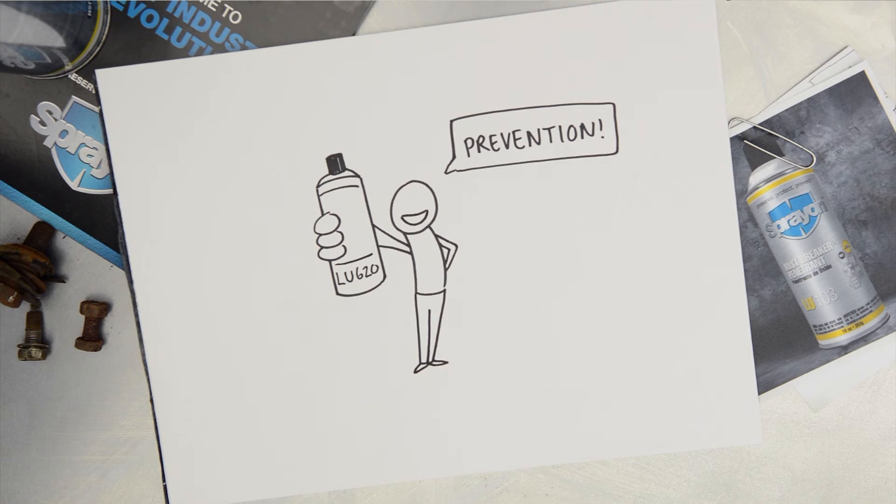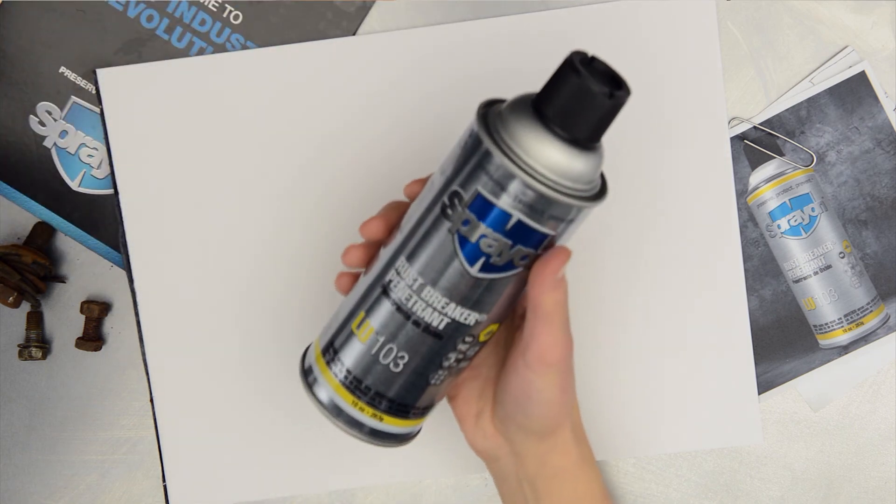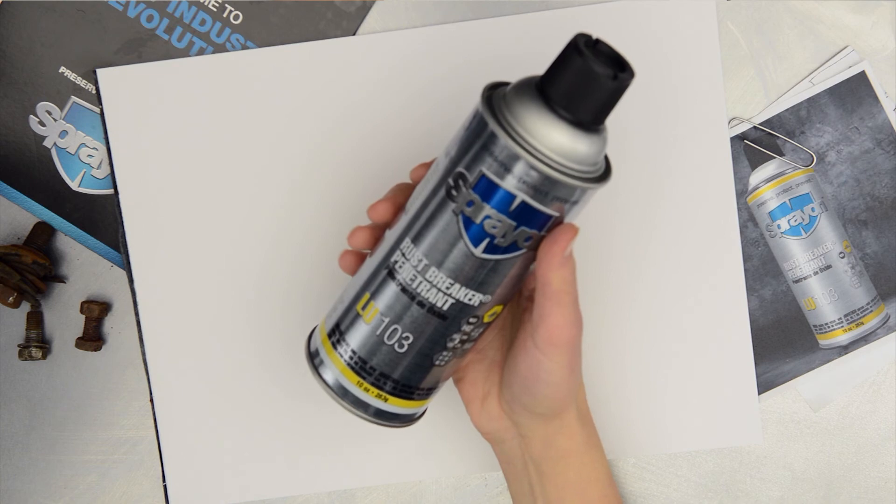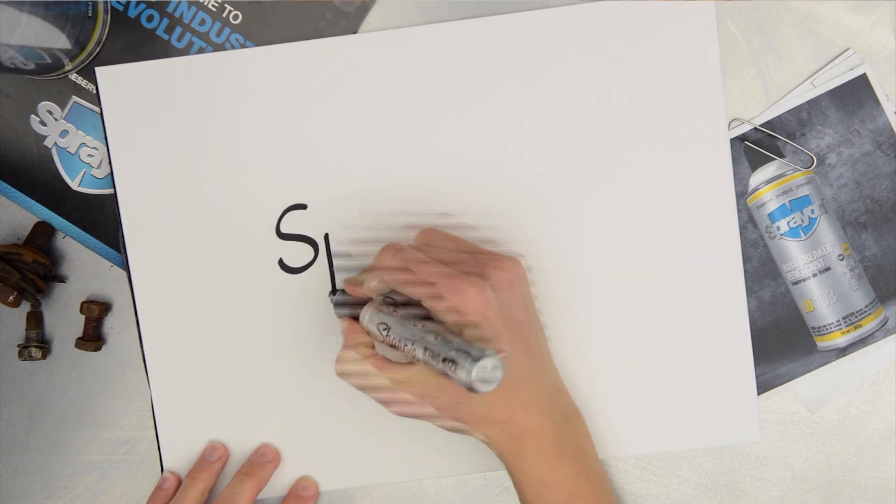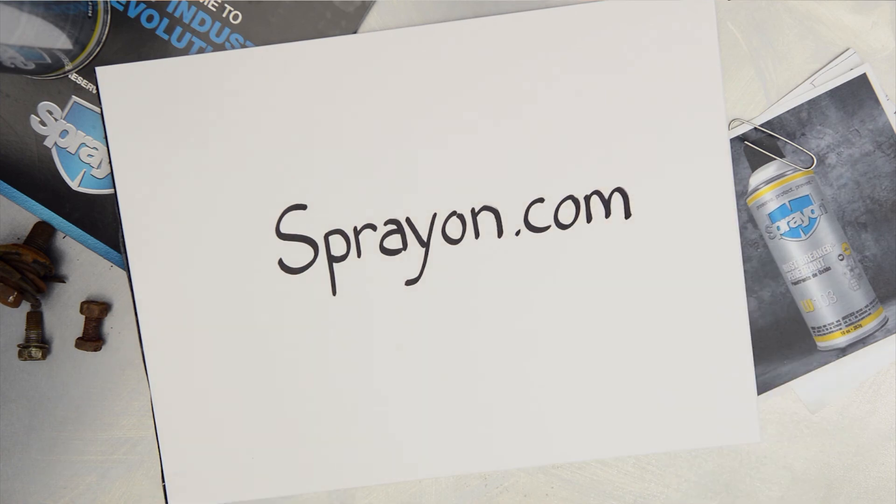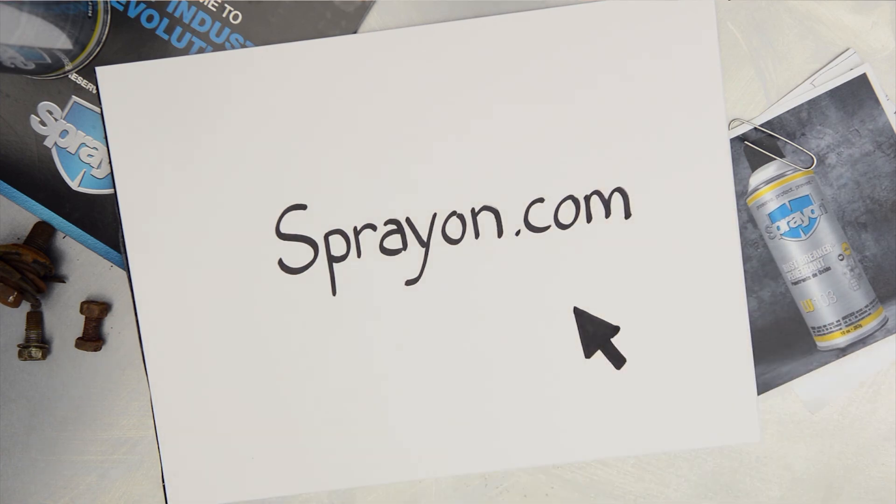Of course, if you do get to the point where your bolts are stuck, spray-on LU-103 penetrant will get the job done better and safer than anyone else. To learn more about Spray-on LU-103 penetrant, Spray-on's full line of high-performance industrial lubricants and chemicals, and the Spray-on 5S system, please visit us at sprayon.com.